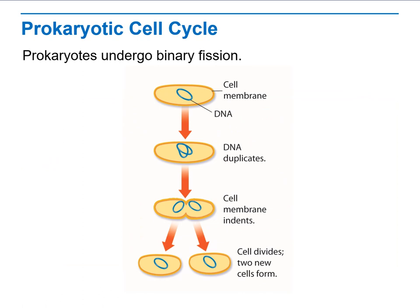In prokaryotic cells, they don't go through cell division in the same way. It's only replication — the mother cell simply replicates or duplicates and divides from the cytoplasm into two identical daughter cells. This procedure is called binary fission.